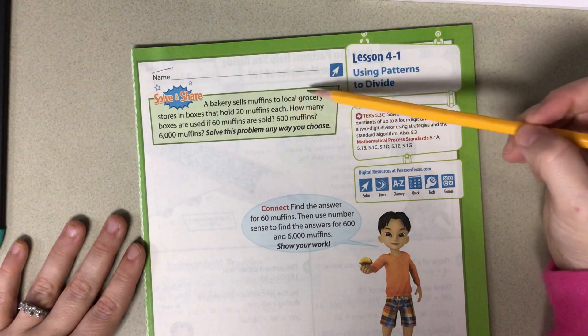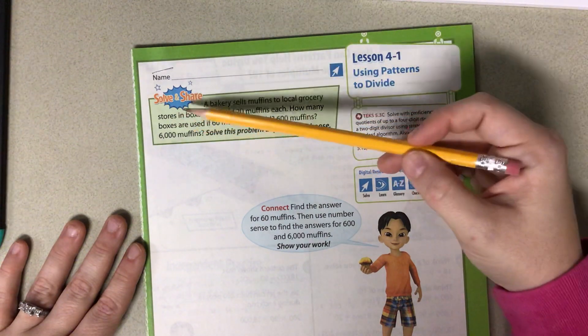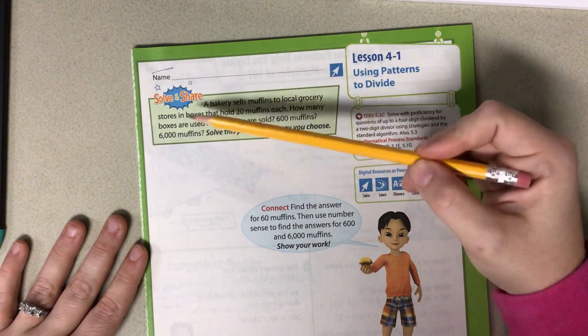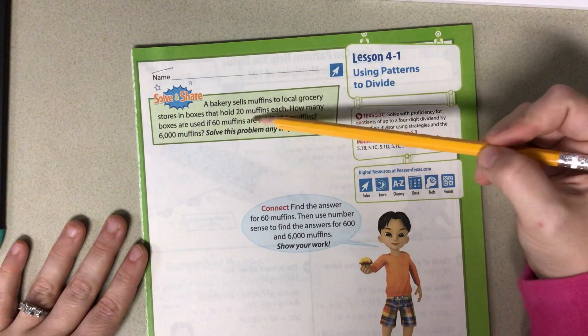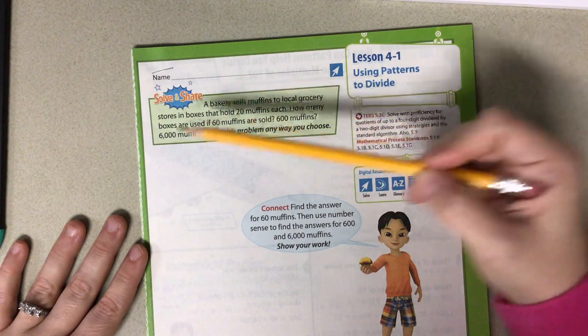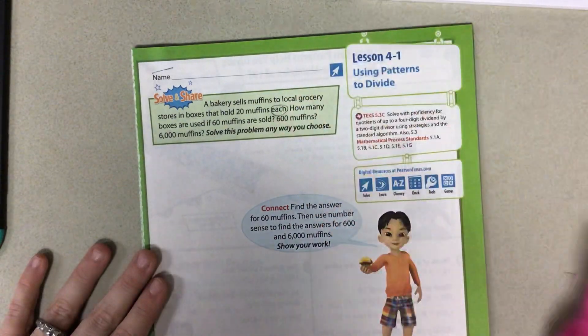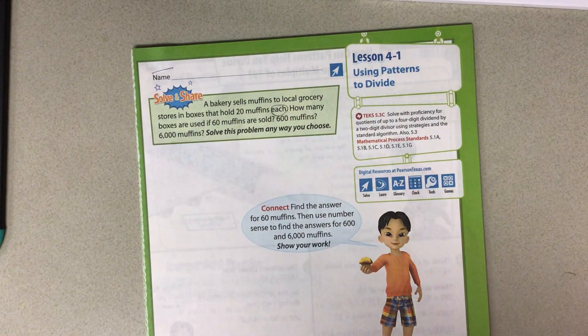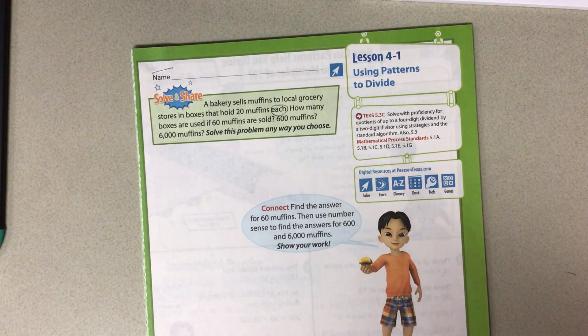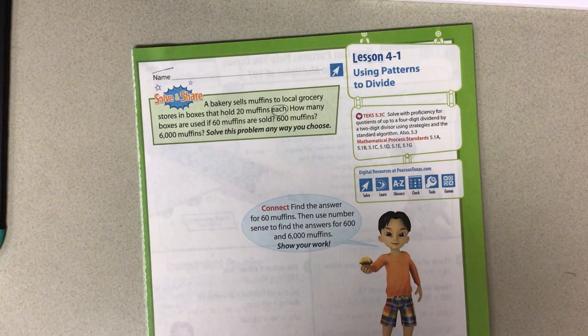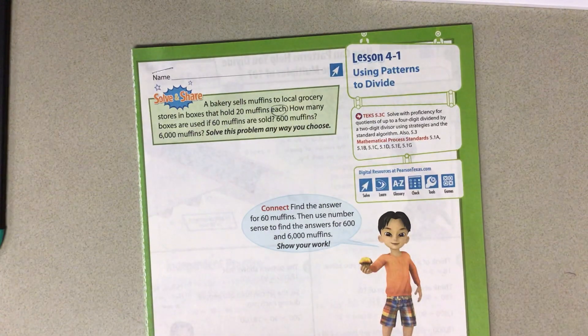A bakery sells muffins to a local grocery store in boxes that hold 20 muffins each. How many boxes are used if 60 muffins are sold, 600 muffins, and 6,000 muffins? Now we have the word each. Before we talked about how each means multiply, but each actually means evenly. And when we talk evenly, we're talking about multiplication or division.